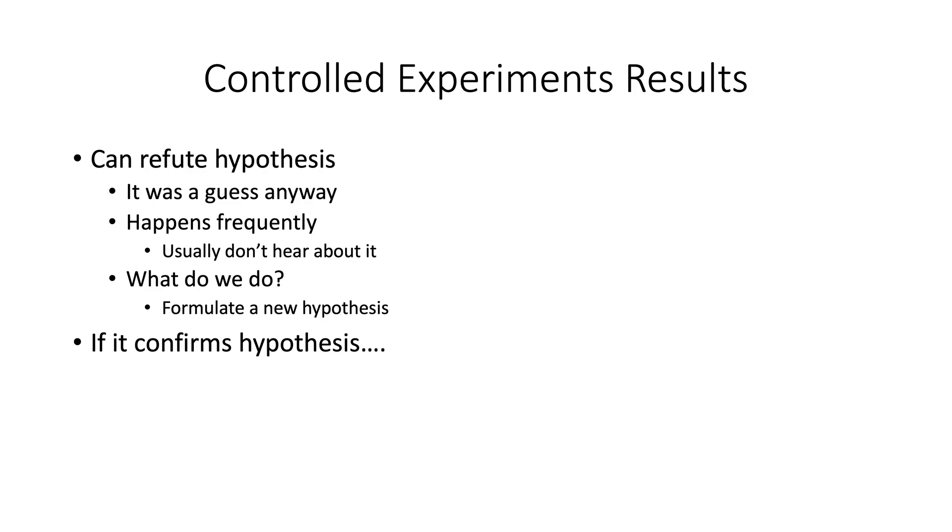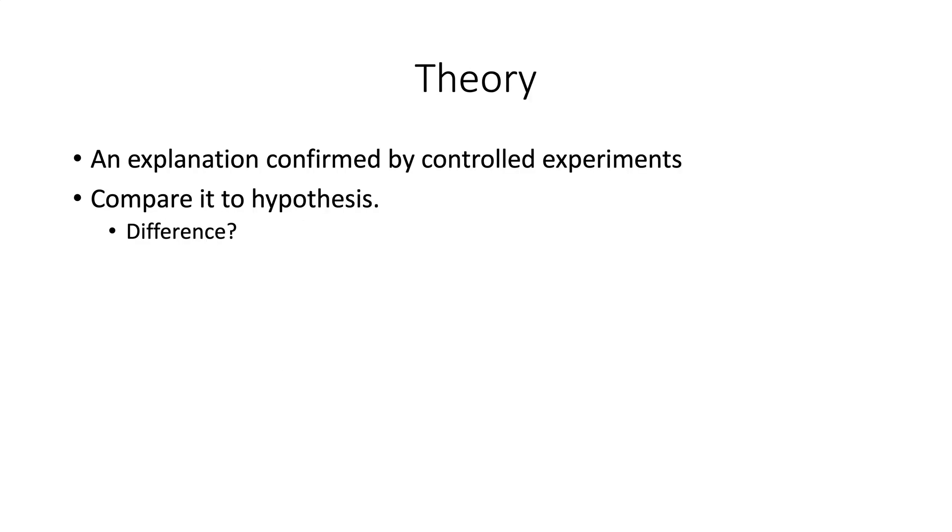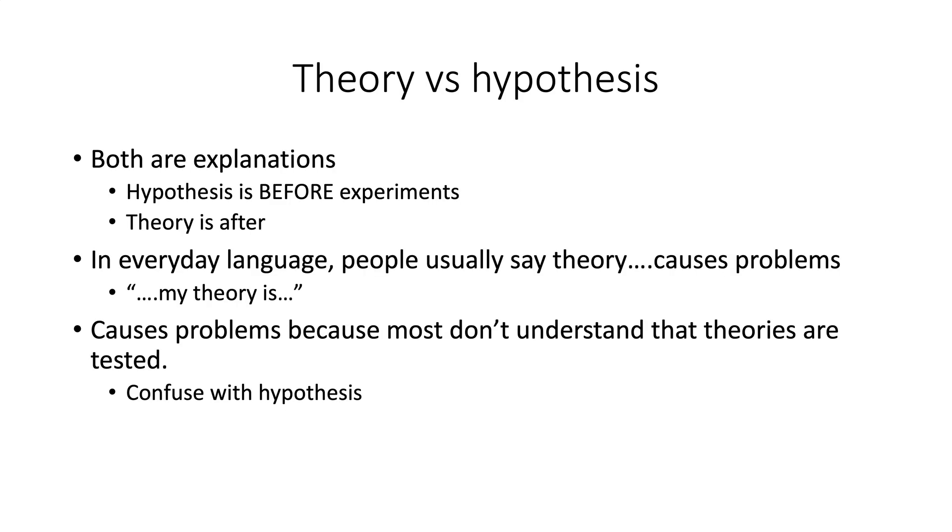If it confirms our hypothesis, then we have a theory. Again, remember, theory and hypothesis are used interchangeably. People say my theory, but they really mean their hypothesis because the theory is tested. This is very, very important. A theory is an explanation confirmed by controlled experiments. A hypothesis is untested. A theory is tested. That's very, very important.